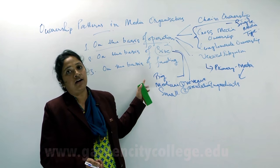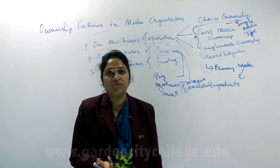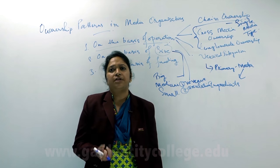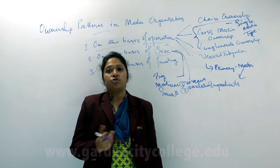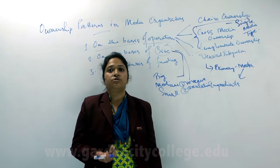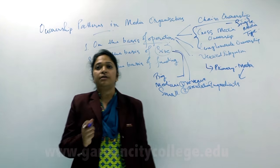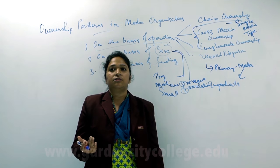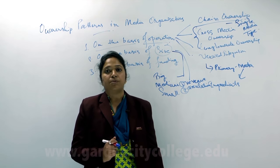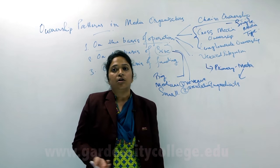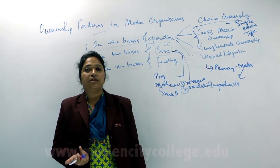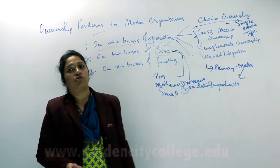On that basis, newspapers are divided into big, medium, and small. Big newspapers are the national dailies — for example, the Times of India, the Indian Express, and The Hindu. These have high circulation figures and very appropriate revenue generation through advertisement. Medium newspapers are regional newspapers; for example, in Karnataka, Prajavani would be an example. Small newspapers are local-based newspapers — if a newspaper is circulating only within the area of Bangalore, it can be termed a small newspaper. On the basis of size, ownership patterns can also be divided.